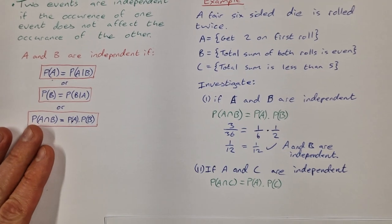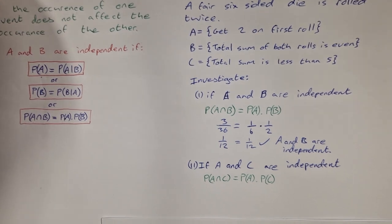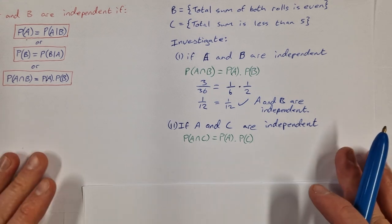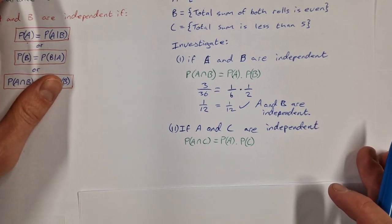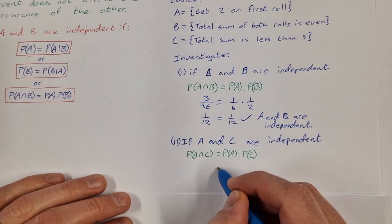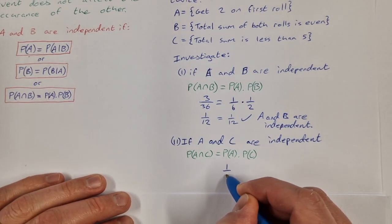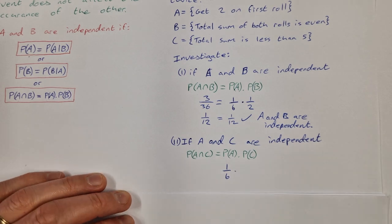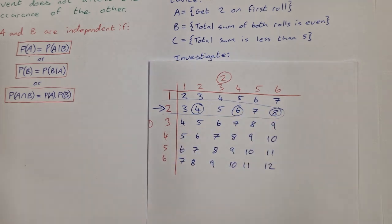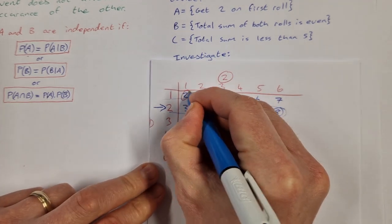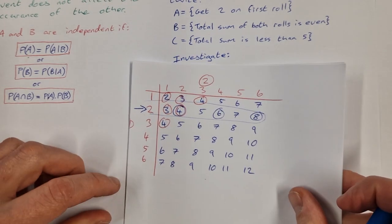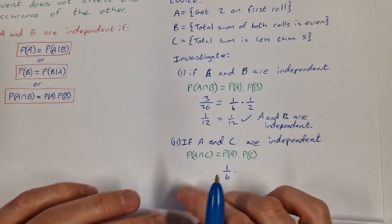Let's look at our second example: investigate if A and C are independent. A is getting a 2 on the first roll, and C is the total sum being less than 5. The probability of A is 1 over 6 as before. For the probability of C — getting less than 5 — those outcomes are 2, 3, 4, 3, 4, and 4 on the grid, which is 6 out of 36, or 1 out of 6.